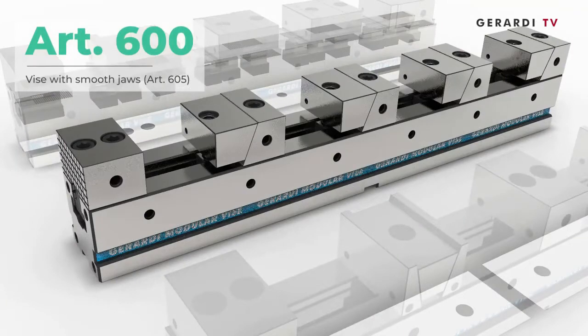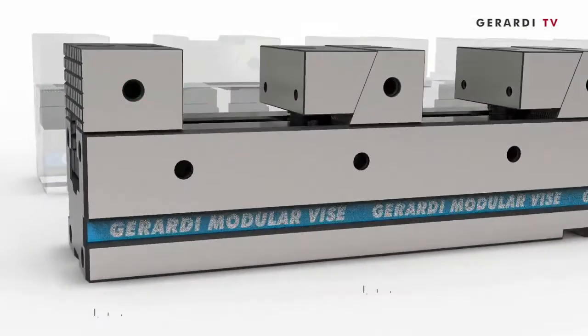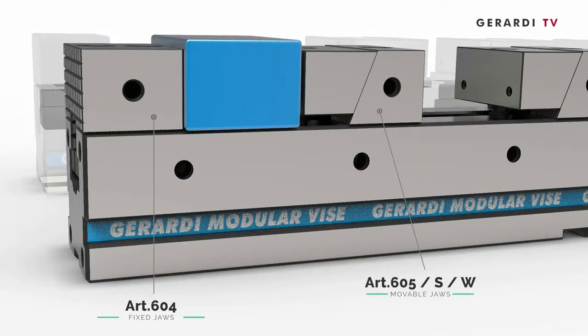Article 600 with smooth jaws, for workpieces clamped directly on vise base.